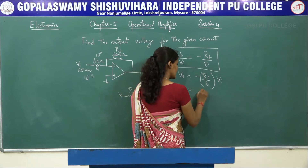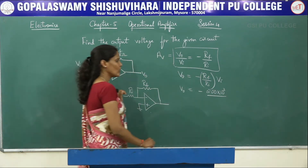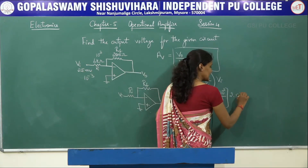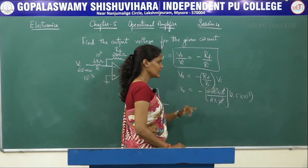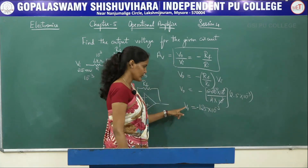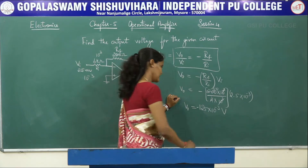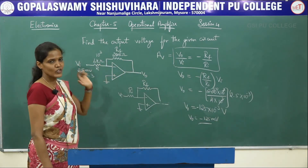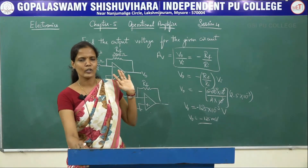The 10³ terms cancel. This gives -(200/4) × 2.5 × 10⁻³ = -50 × 2.5 × 10⁻³ = -125 × 10⁻³. So V0 = -125 millivolts. The problems are very simple in this chapter. The only thing is you have to identify correctly to which terminal of the op-amp the input signal is applied and apply the correct formula — then you can solve these problems very easily.